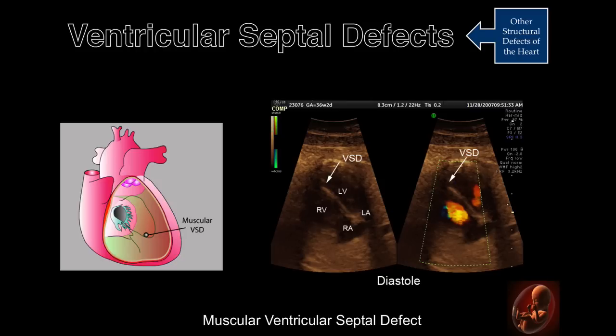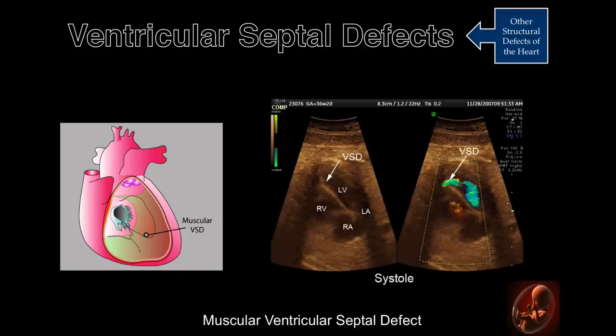This image was obtained during ventricular systole. The ultrasound consists of identical images, one without and one with color Doppler. The image on the left demonstrates the muscular septal defect. The shunting of blood through the muscular septal defect is identified in the color Doppler image on the right.